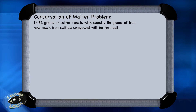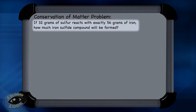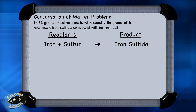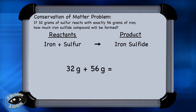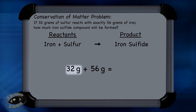Here's another conservation of matter problem. If 32 grams of sulfur reacts with exactly 56 grams of iron, how much iron sulfide compound will be formed? In this reaction, the iron and the sulfur are the reactants. They're going to combine to form the iron sulfide compound, which is the product. 32 plus 56 should add up to be the mass of the iron sulfide. When you add those two numbers together, you find that the total mass of the iron sulfide compound has to be 88 grams.